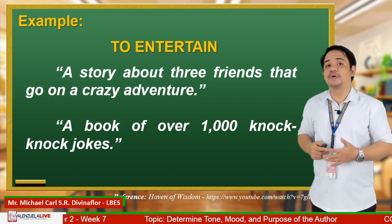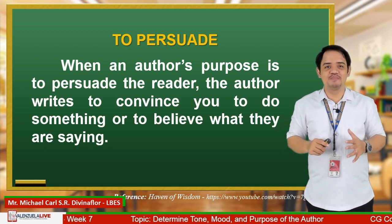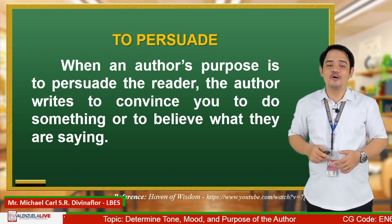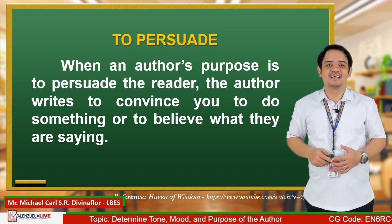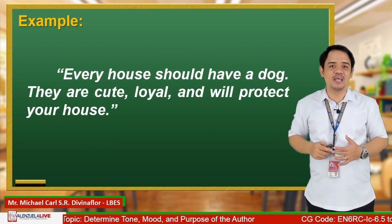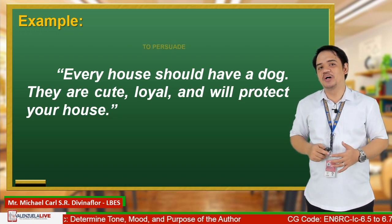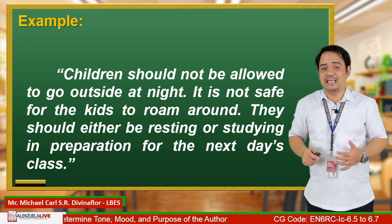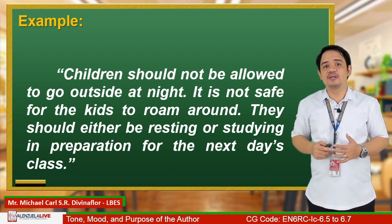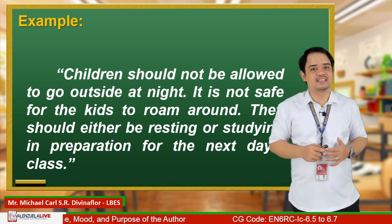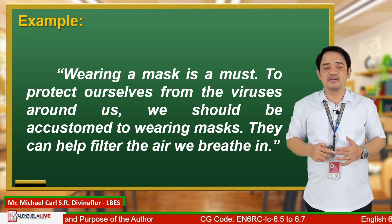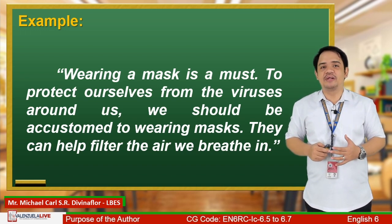The last purpose is to persuade. When an author's purpose is to persuade the reader, the author writes to convince you to do something or to believe what they are saying. Example: 'Every house should have a dog. They are cute, loyal, and will protect your house.' Another example: 'Children should not be allowed to go outside at night. It is not safe for kids to roam around.' Another: 'Wearing a mask is a must. To protect ourselves from viruses, we should be accustomed to wearing masks. They can help filter the air we breathe in.'